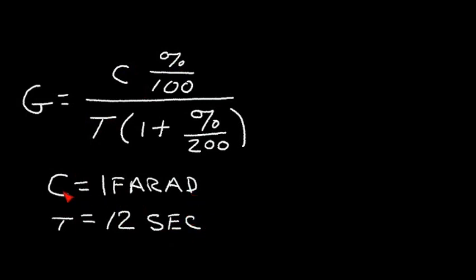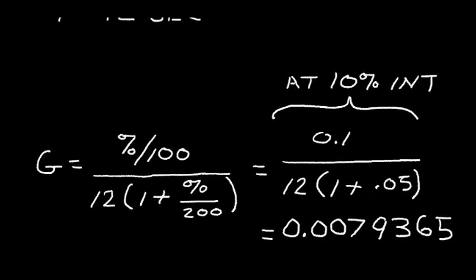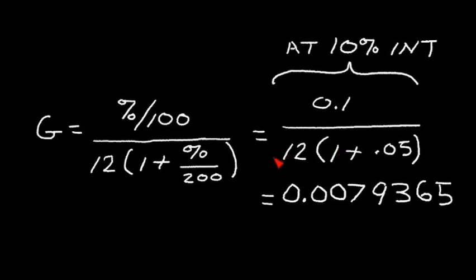So if we substitute one for C and 12 for T, we can simplify this equation a bit. And we get this equation for G in terms of the percent interest.